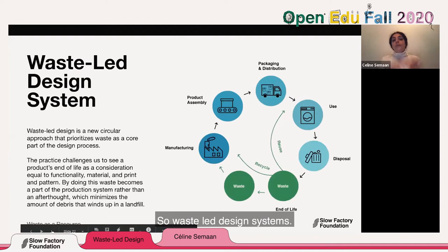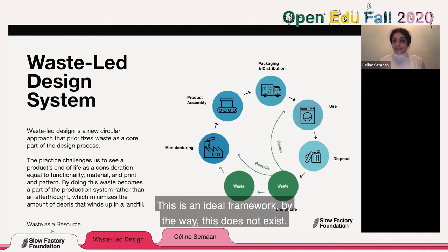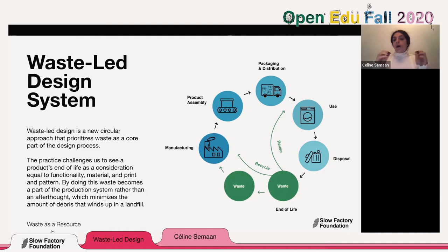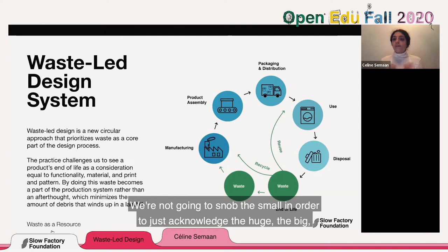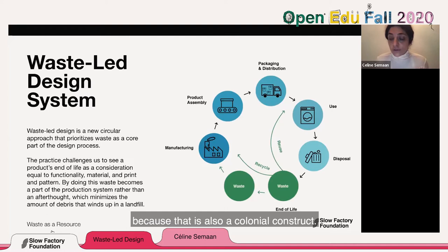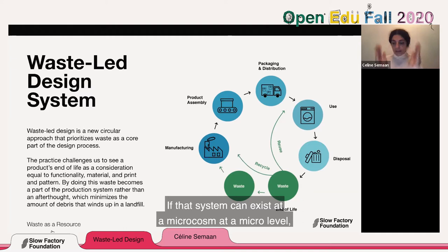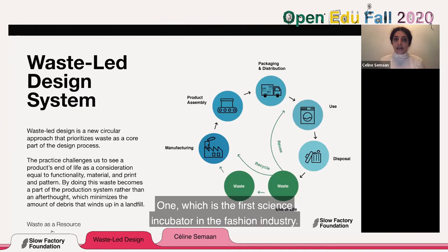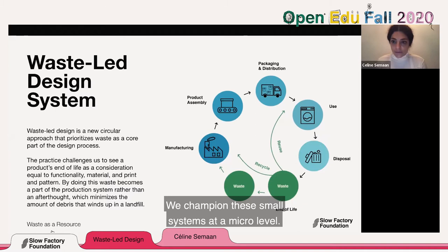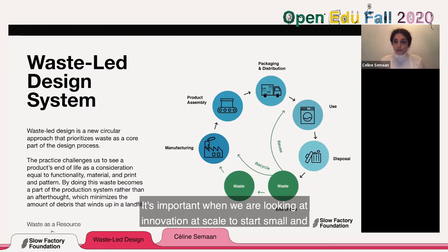This waste-led design system is an ideal framework — it doesn't yet fully exist, or exists only in microsystems. And we have examples of those microsystems. We're not going to snob the small in order to only acknowledge the big, because that is also a colonial construct. If a system can exist at a micro level, it can exist at a macro level — it can be multiplied and duplicated. In the One by One program here at Slow Factory, the first science incubator in the fashion industry, we champion these small systems. It's important when looking at innovation at scale to start small and make sure it works in a microsystem first.